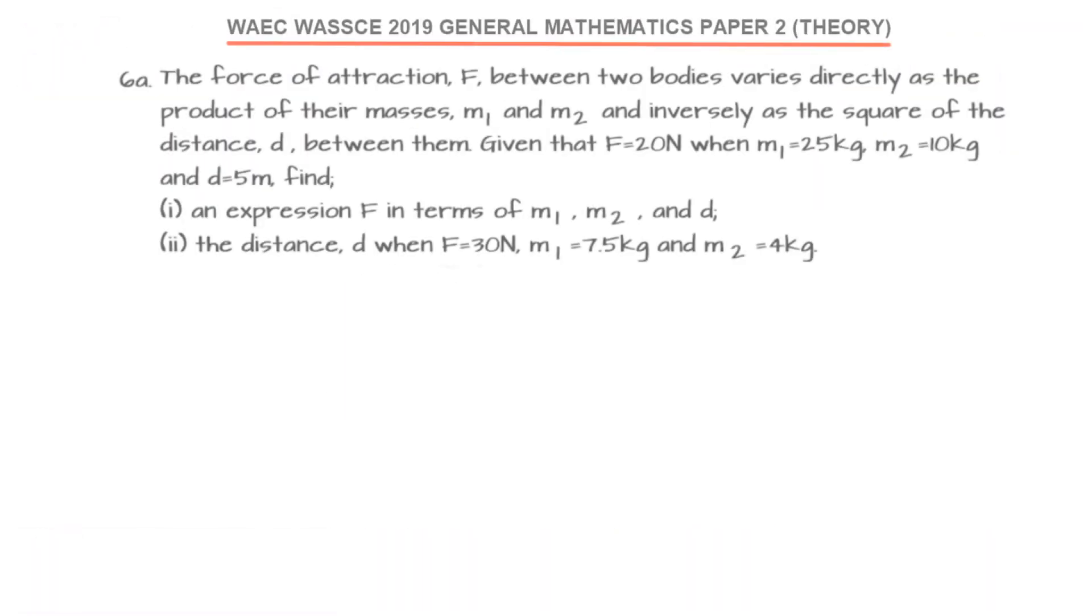The force of attraction F between two bodies varies directly as the product of their masses M1 and M2 and inversely as the square of the distance D between them. When we are given that the force is 20 N when M1 is 25 kg,